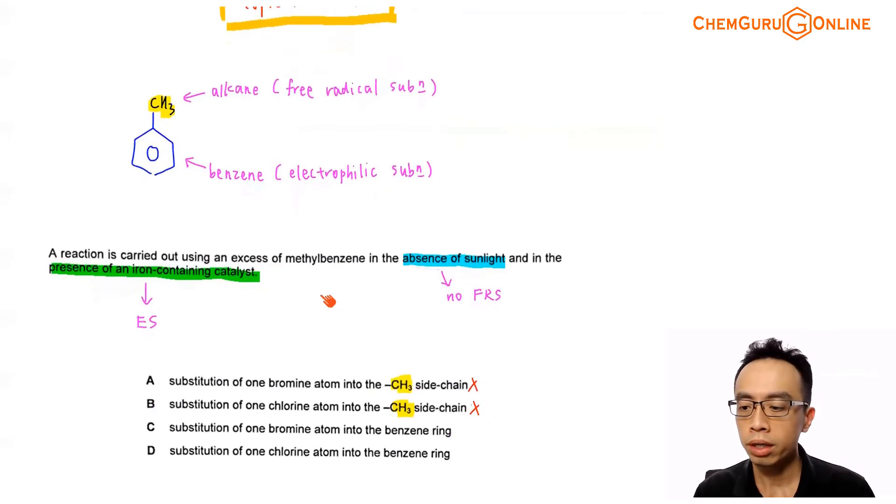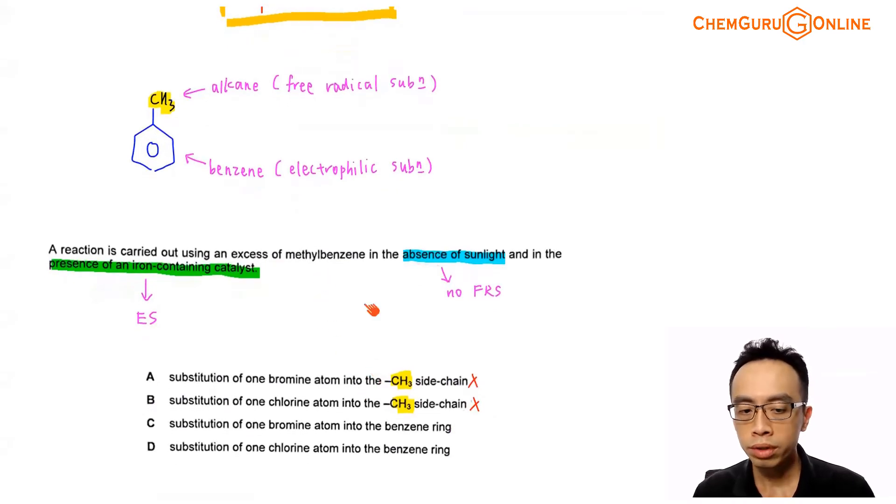So what we can do straight away is we can go back to our options and we can eliminate options A and B because A and B is targeting substitution of my alkyl group or my methyl side chain. And since there's no free radical substitution, not possible for A to be the answer, not possible for B to be the answer. Now we have to choose between C and D, substitution of bromine atom into the benzene ring versus chlorine atom into the benzene ring.